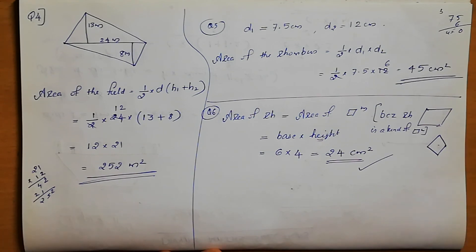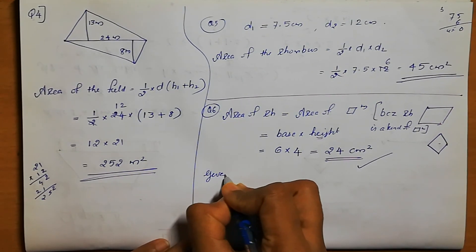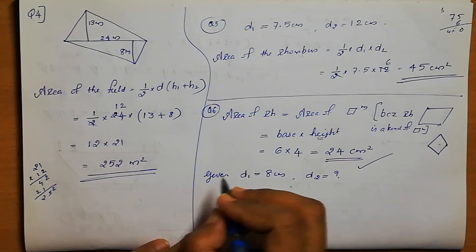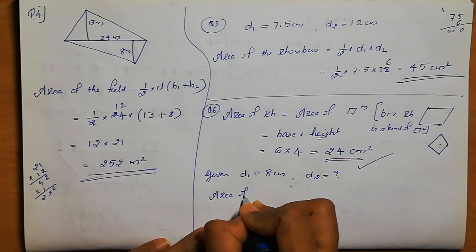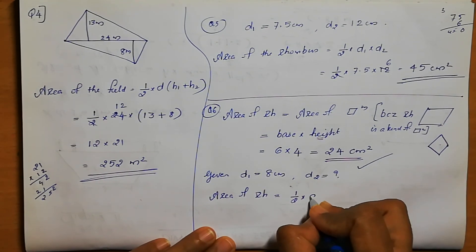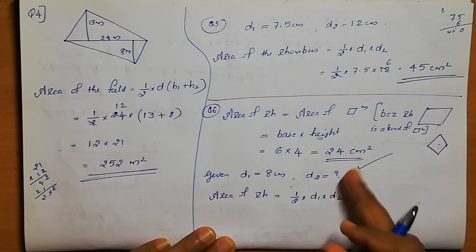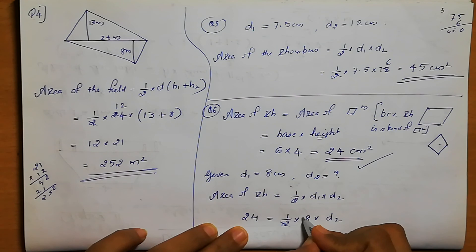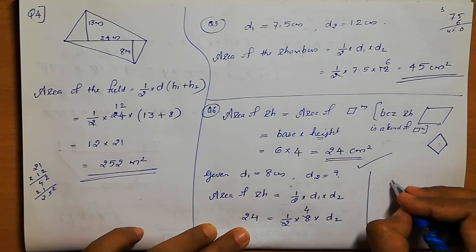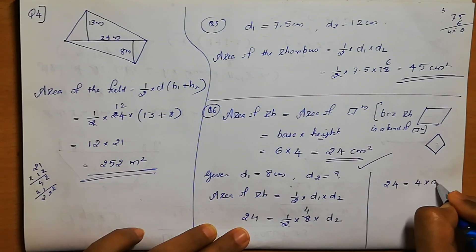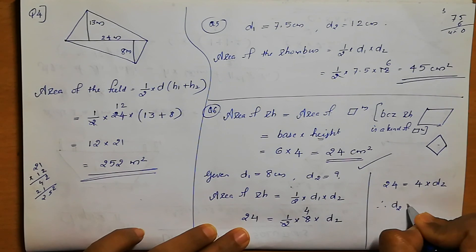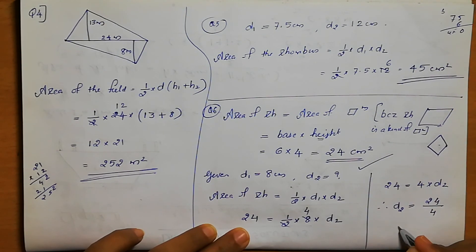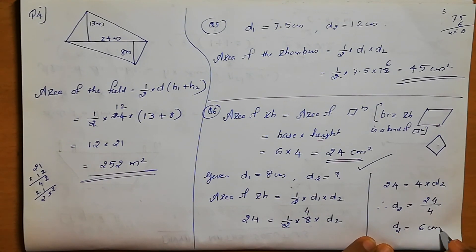Now to find the other diagonal: D1 = 8 cm, D2 is unknown. Area of rhombus = half into D1 into D2. Substituting: 24 = half into 8 into D2, so 24 = 4 into D2. Therefore D2 = 24 divided by 4 = 6 cm. The length of the other diagonal is 6 centimeter.